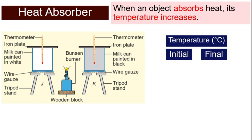Before we start the experiment, we will record the temperature, the initial temperature for J and K. And the initial temperature should be the same, say it is 30 degrees Celsius. Then we will light the Bunsen burner and wait for 10 minutes.